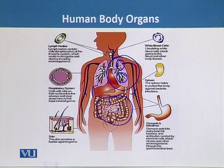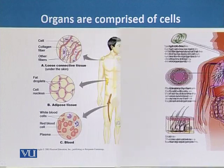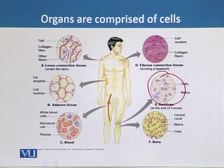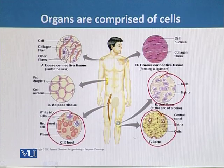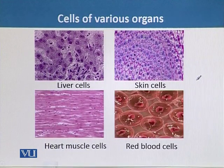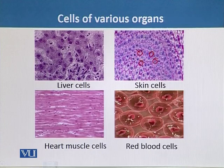These systems are further composed of smaller cells. We can see the cells of the cartilage, the bone, the blood cells, and adipose tissues — they are all composed of cells. We can also see skin cells, liver cells, heart muscle cells, and red blood cells, all composed of cells.